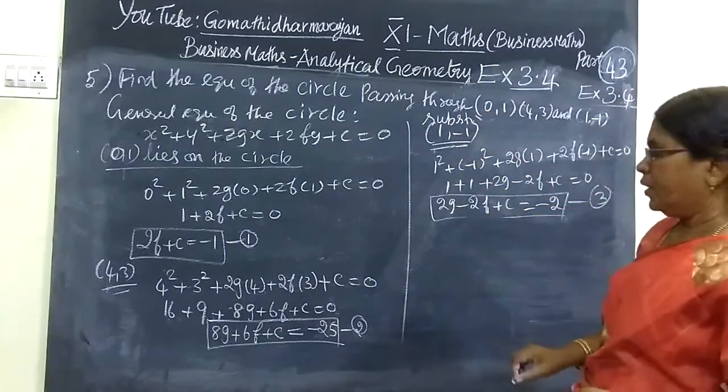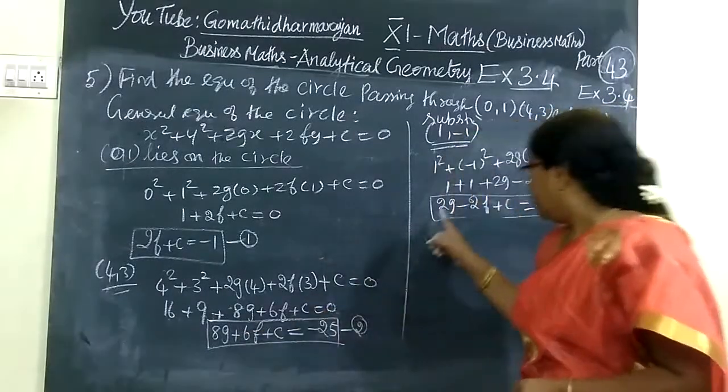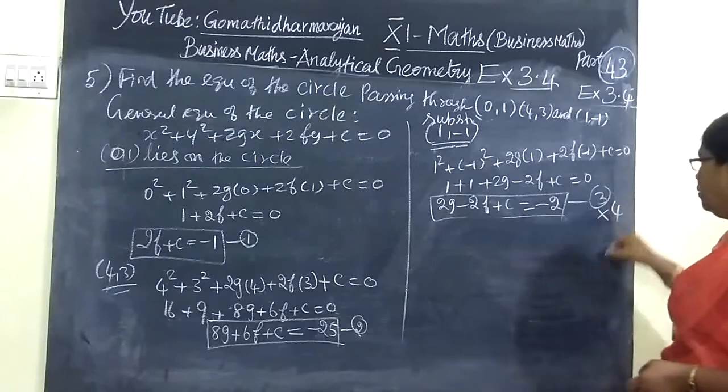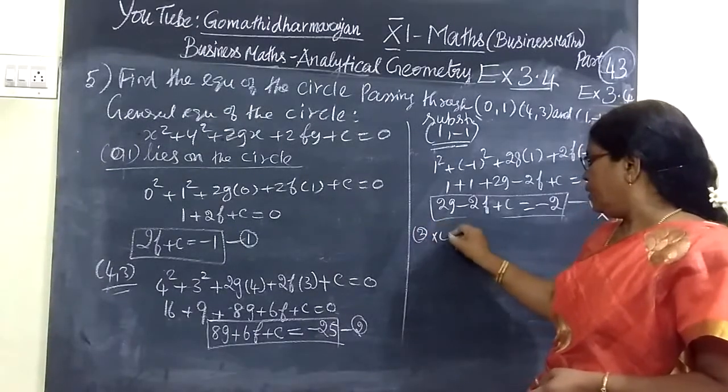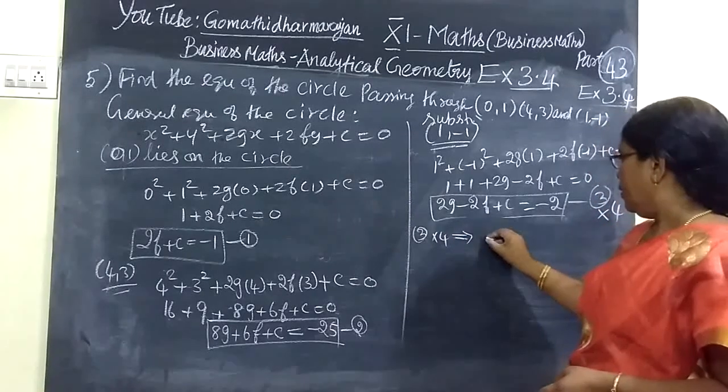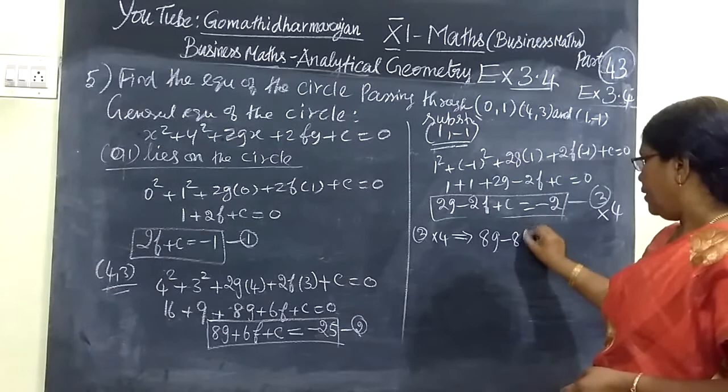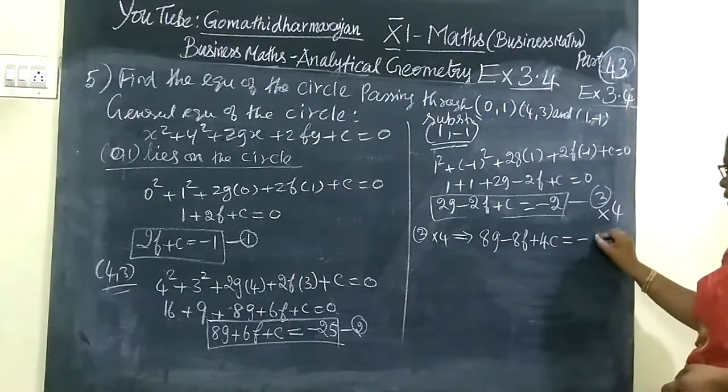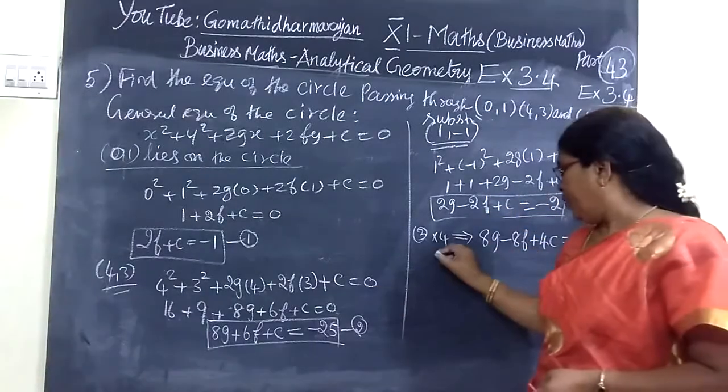Now, I will multiply equation 3 by 4. Equation 3 times 4 implies 8g minus 8f plus 4c equal to minus 8. Into 4, into 4, into 4.